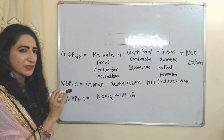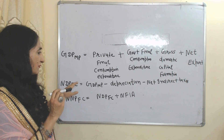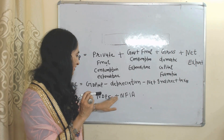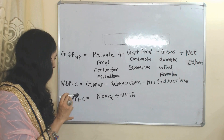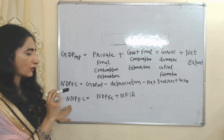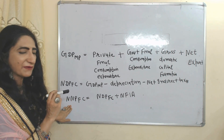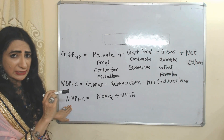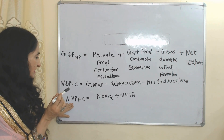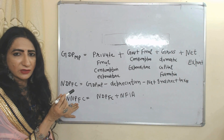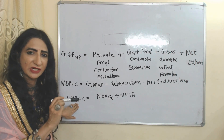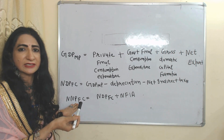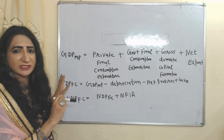When we subtract depreciation and net indirect taxes from GDPMP, it becomes NDPFC. When we add net factor income from abroad to NDPFC, it becomes NNPFC — net national product at factor cost — which equals national income. So by this way, we can calculate national income using the expenditure method.